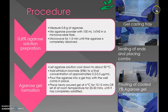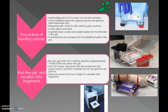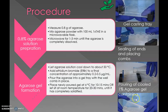Here we can see the gel casting tray. First, we seal its ends, then place the comb, and after that pour the agarose containing ethidium bromide. After 30 minutes, we can see the gel has been set with the wells present in it.